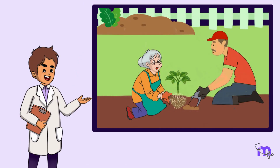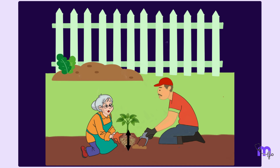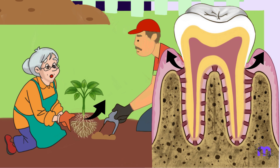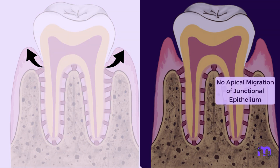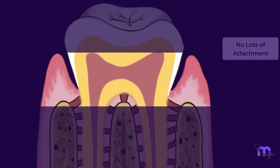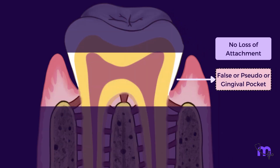If the elderly lady had asked the gardener to just add more soil instead of digging deeper, the roots would still be completely covered. This gives the appearance of increased pit depth. This can be compared to the second mechanism of pocket formation, where the gingiva overgrows, leading to increased depth, without apical migration of junctional epithelium. Since there is no loss of attachment, it is called a false, or pseudo, or gingival pocket.